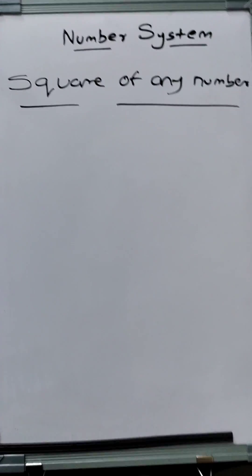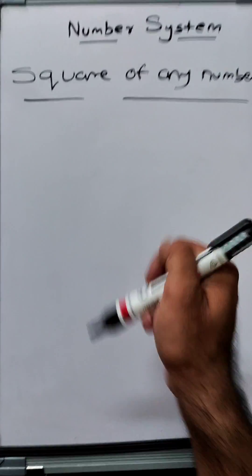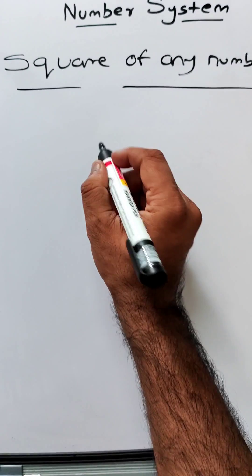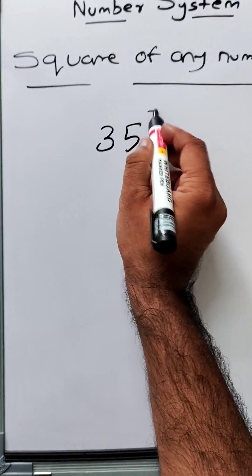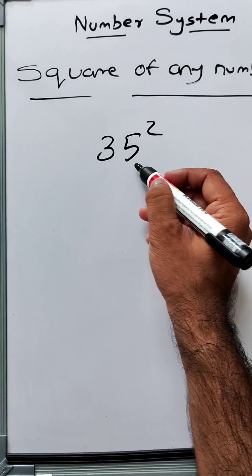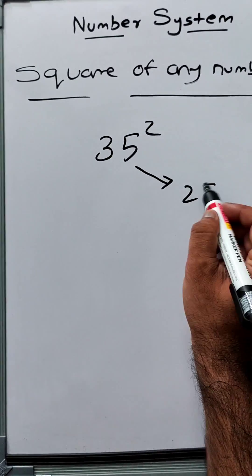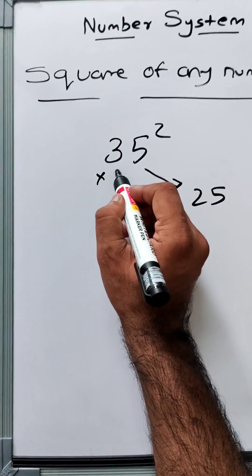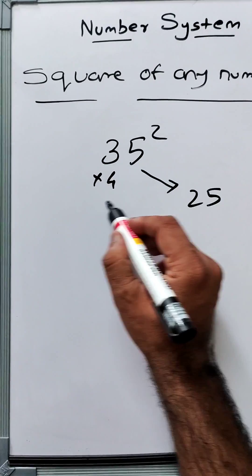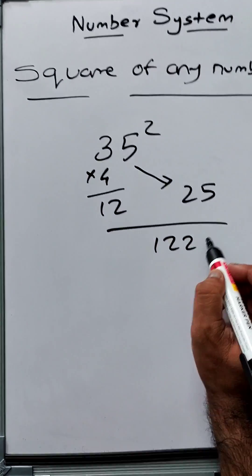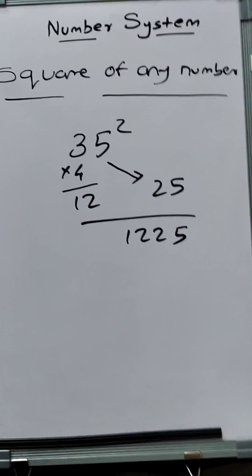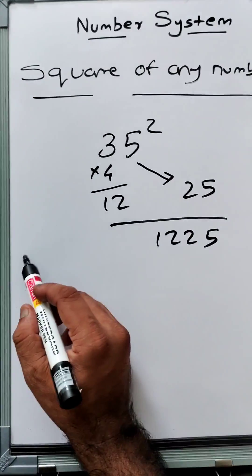Now I'll be explaining how to find out square of any number. Numbers ending in 5 is very easy. Let's say I want to find out 35 squared. We just do 5 squared, which is 25. Multiply 3 with the next number 4, which is 12. That is the answer: 1225. This was pretty easy. What if I want to find out the square of a number not ending in 5?